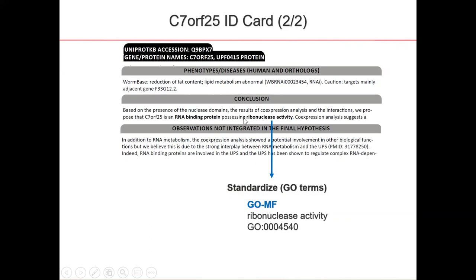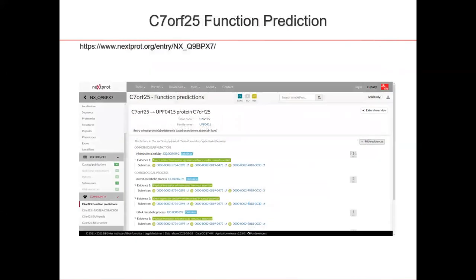They come to a conclusion and propose a hypothesis. In this case, the students proposed that this entry had ribonuclease activity — that is the GO molecular function term, ribonuclease activity, for this entry. These predictions of the function of the proteins are now displayed in NEXTProt in a community function prediction page for the entry. We see here the ribonuclease activity term with the ORCIDs of the tutors and a number of different evidences representing the different types of data supporting this function.